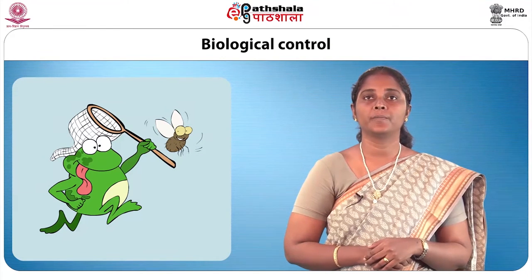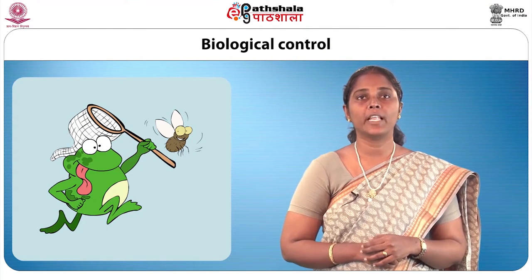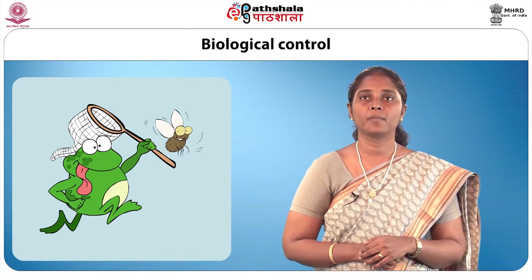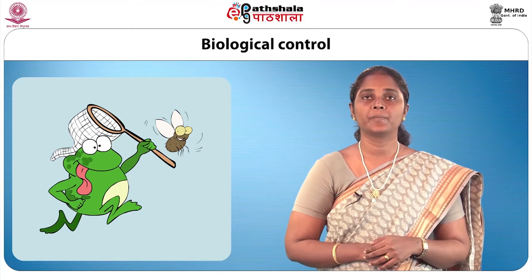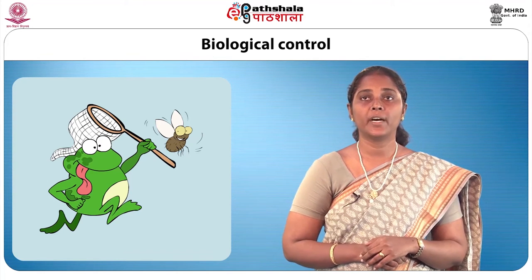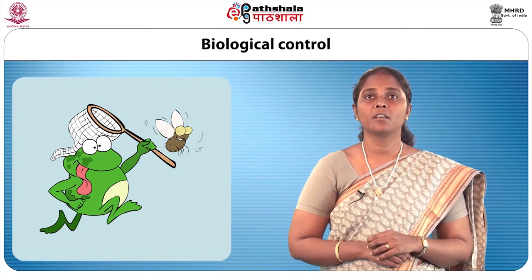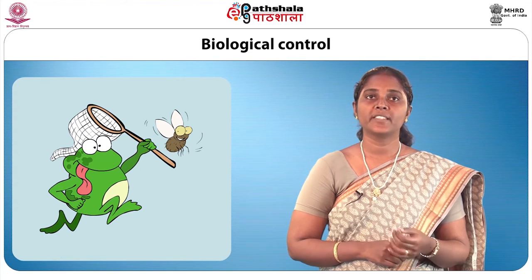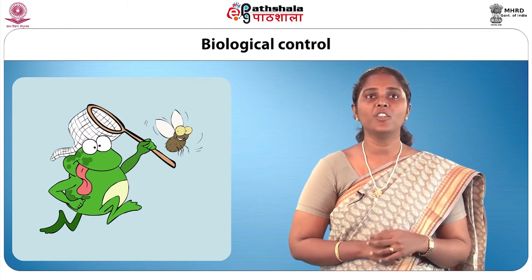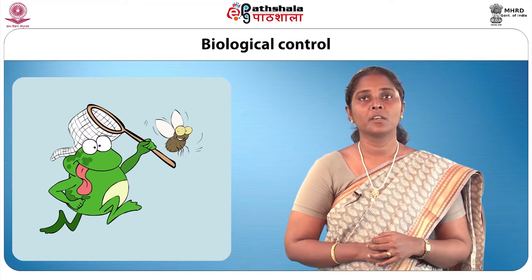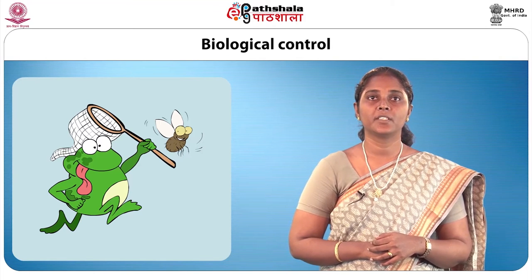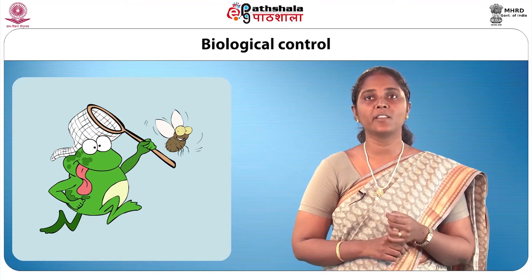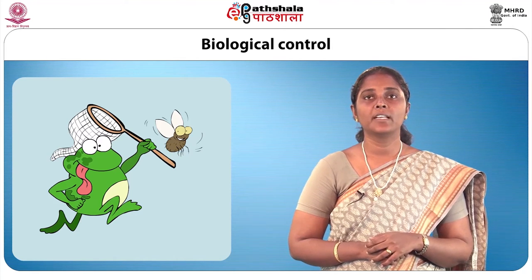Biological control includes the introduction of natural enemies like parasites and predators. More pest enemies can be released into the target area. However, this does not assure eradication and the degree of control keeps fluctuating. Pests can also be biologically altered by making them sterile, or through the use of pheromones or juvenile hormones. Pheromones can be useful in monitoring pest populations, and a manufactured copy of the pheromone that a female insect uses to attract the male can confuse males and prevent mating, resulting in lower pest numbers.